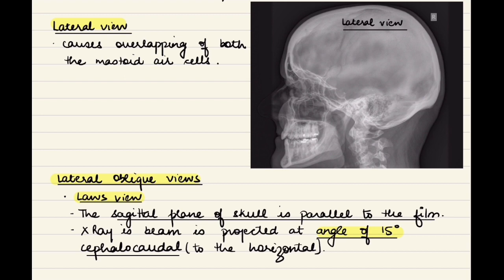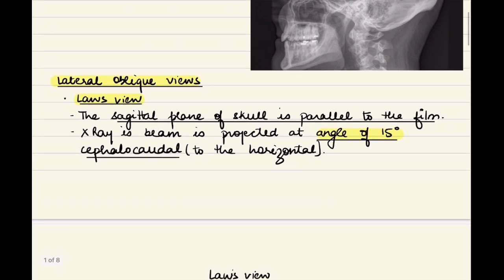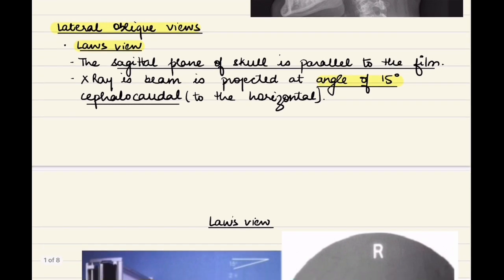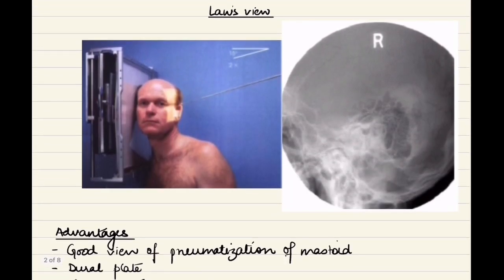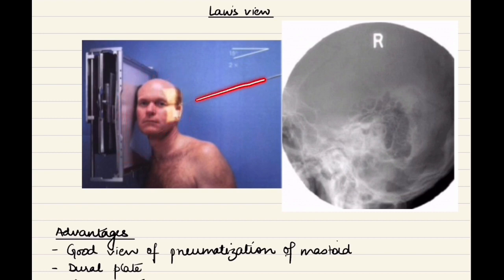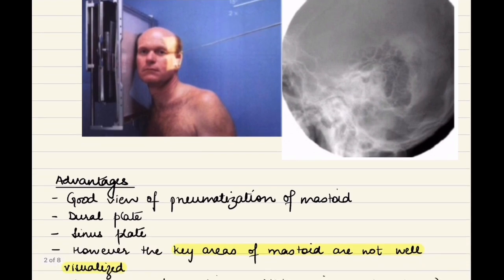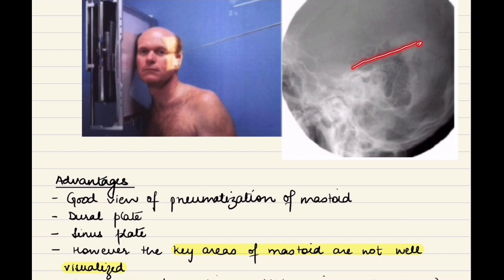To overcome this disadvantage we added angulation to the x-ray beams and these are known as lateral oblique views, the first one being Law's view. In Law's view, the sagittal plane of the skull is kept parallel to the x-ray film and the x-ray beams are projected at an angle of 15 degrees to the horizontal. It has a lot of advantages over the lateral view in that we can have a good idea about the pneumatization of the mastoid and the pneumatized mastoid air cells. We get a decent idea about the dural plate and the sinus plate also.